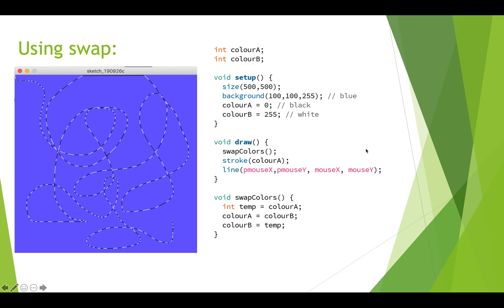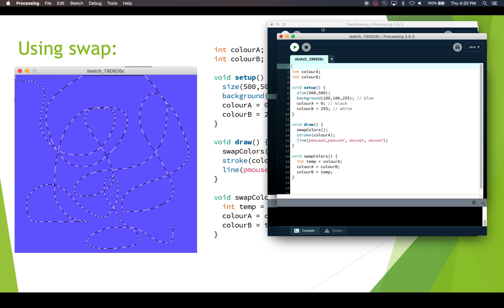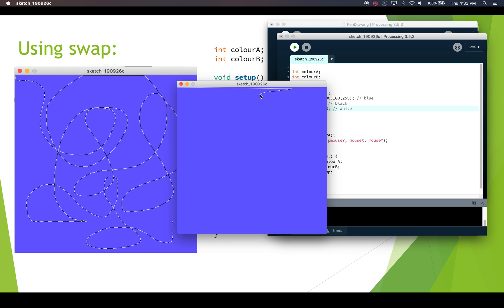Here's an example program using a swap to draw a dashed line. We've got our two colors, we set up our canvas with a blue background, and we initialize our two colors to black and white. Every time draw is called, we swap the colors. We color the line using the stroke command with colorA, while colorB holds the other color. We draw a line based on the previous and current mouse positions. The swapColors function performs that three-step swap with a local temp variable. Let's run Processing and see what this looks like — as we draw, we've got this swap happening.